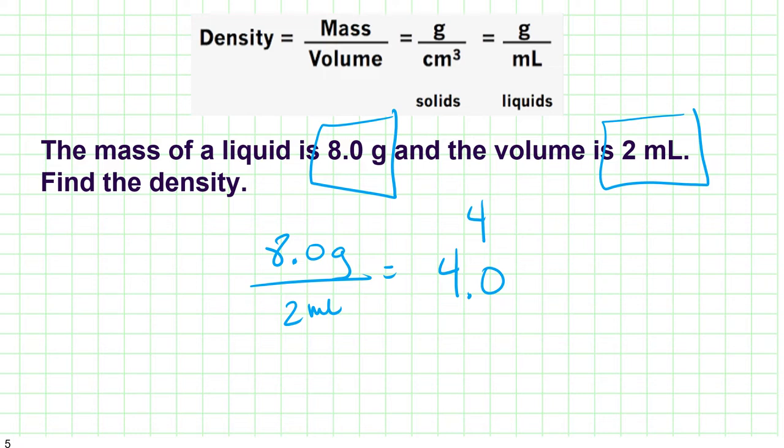So let's count our sig figs. Remember when we multiply and divide, we're going to count the sig figs and we're going to keep the fewest number of sig figs in our final answer. This piece of data has two sig figs. One, two. Remember that zeros to the right of a decimal do count when there's a non zero digit. This guy only has one sig fig. One is fewer than two. So we're going to keep only one sig fig.